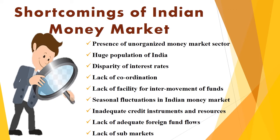The last shortcoming is lack of sub-markets. Inadequate sub-markets in India are also a reason for the underdevelopment of the money market. For the promotion of sub-markets, the presence of acceptance houses, issue houses and discount houses is required. Only after 1988 was the Discount and Finance House set up, but it still has a long way to improve the working of the money market. Various reforms have been undertaken to overcome these shortcomings.